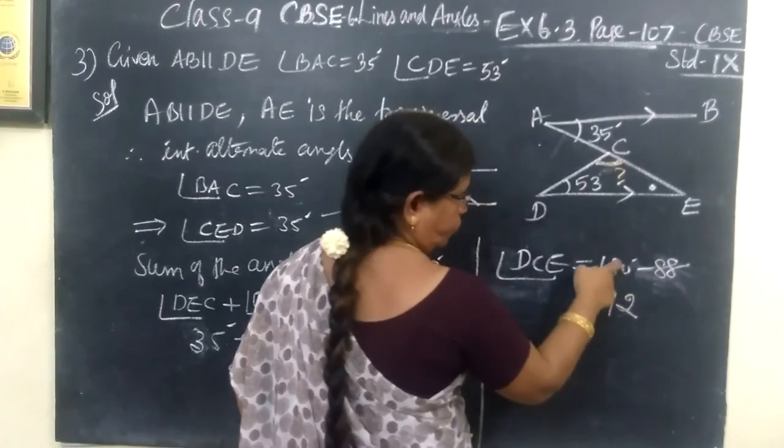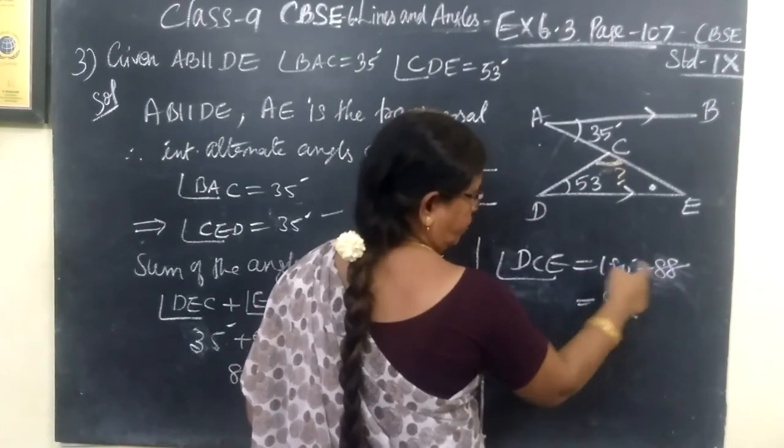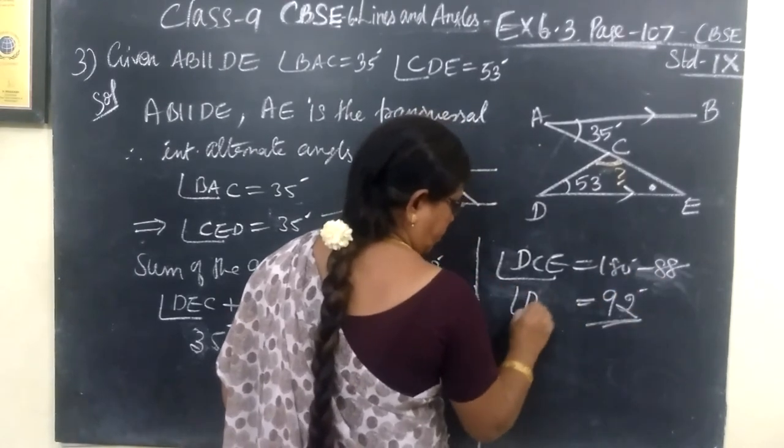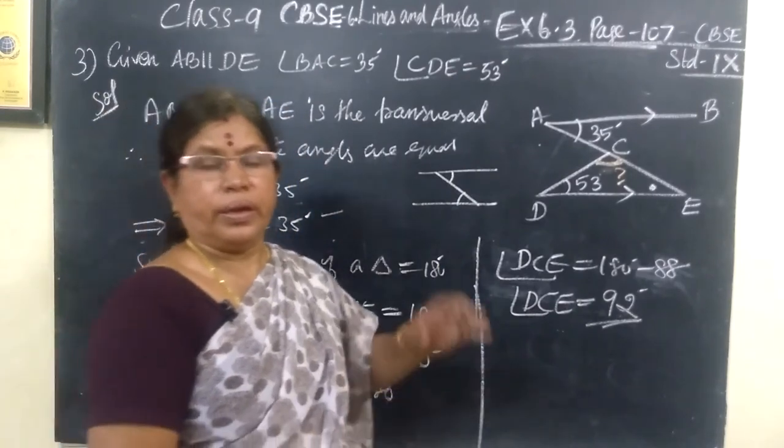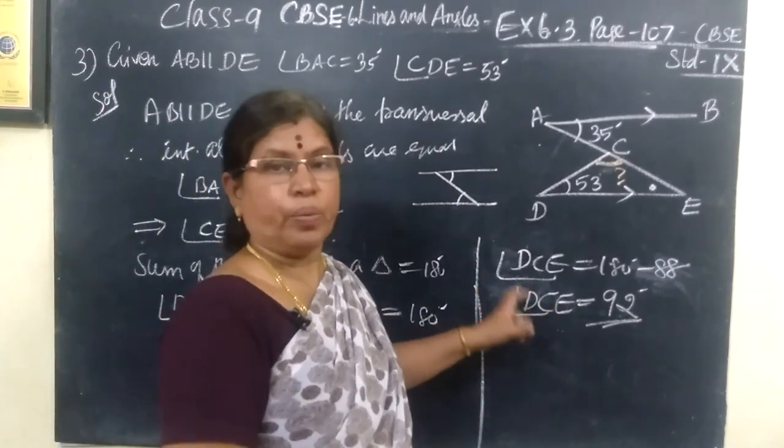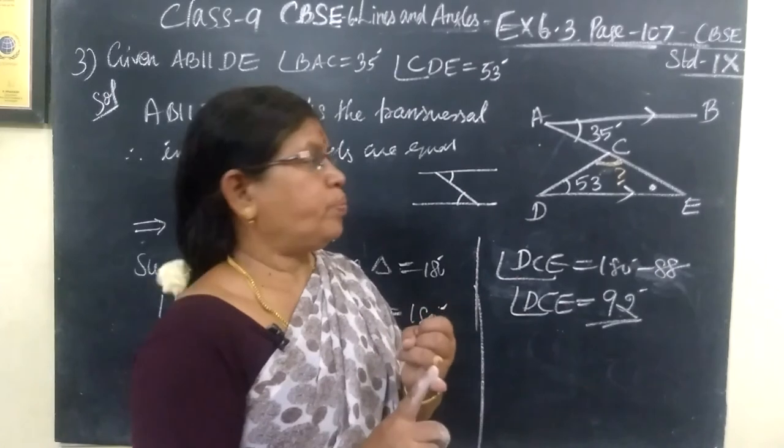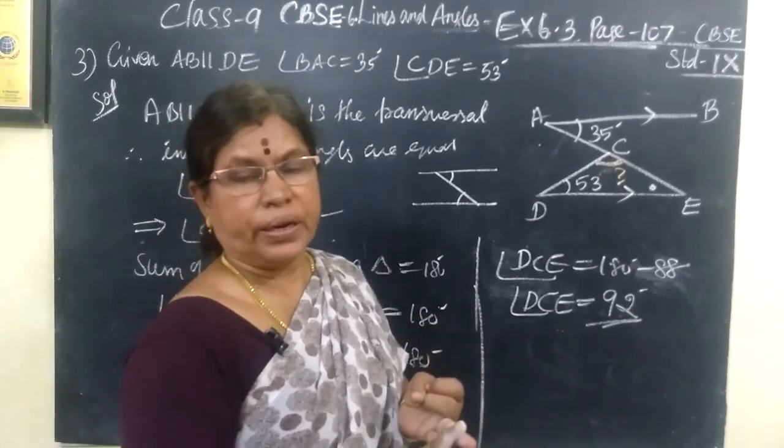This is the answer. Therefore, DCE is 92 degrees. In this problem, we used two properties: alternate angles are equal, and the sum of angles in a triangle equals 180 degrees.